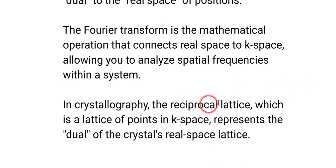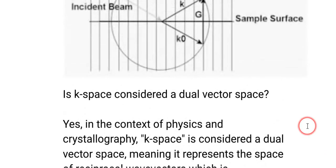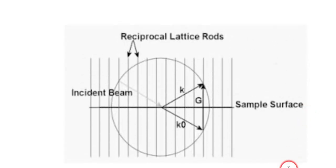And they calculate that using a Fourier transform, a mathematical operation that connects real space to k-space, allowing you to analyze spatial frequencies within a system. In crystallography, the reciprocal lattice, which is a lattice of points in k-space, represents the dual of the crystal's real space lattice. So isn't that just so cool? Here is a real life example of covectors. I love it. All right. See you later.